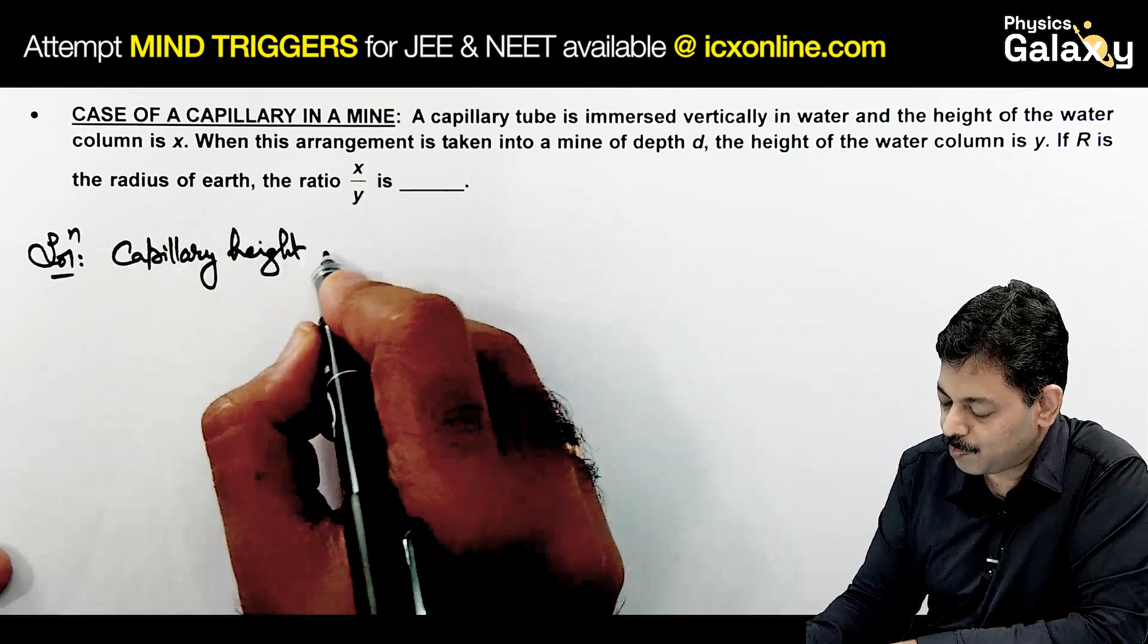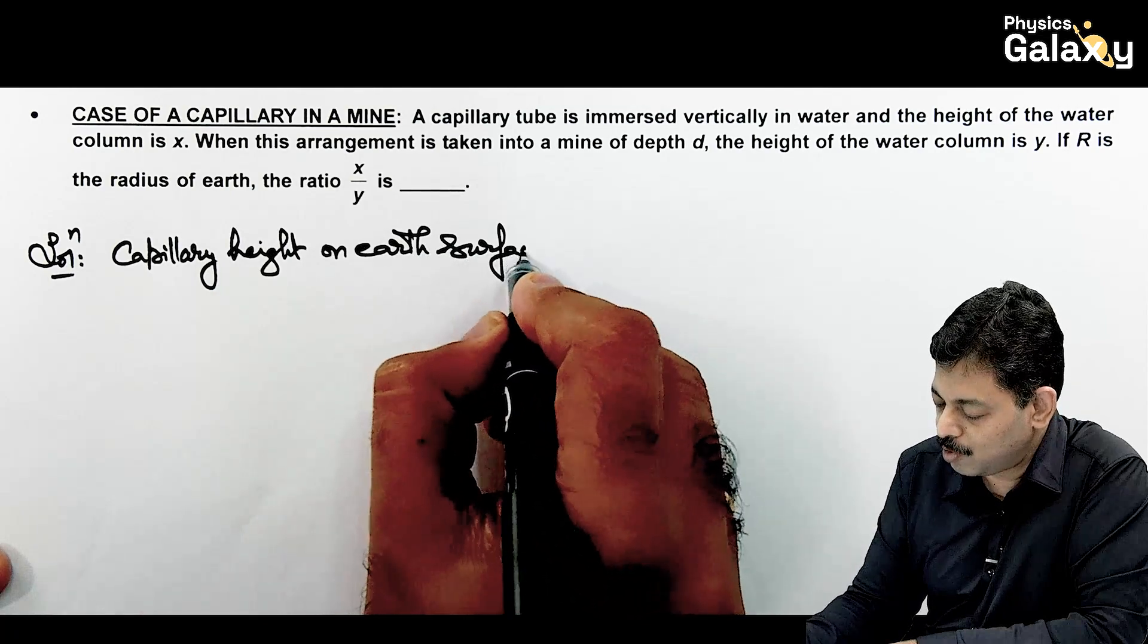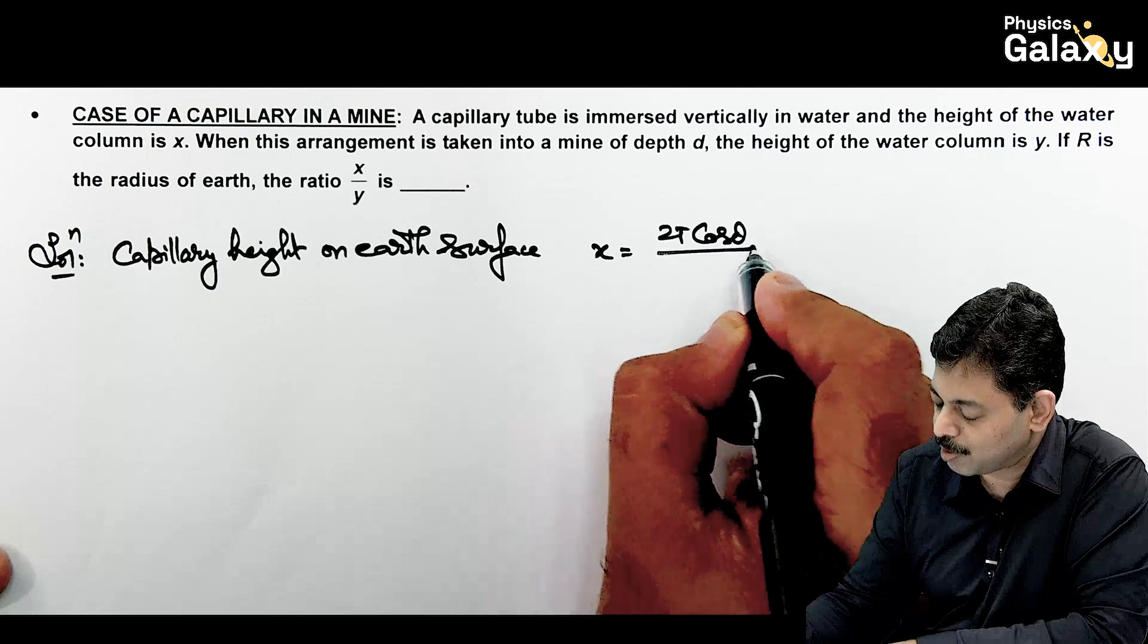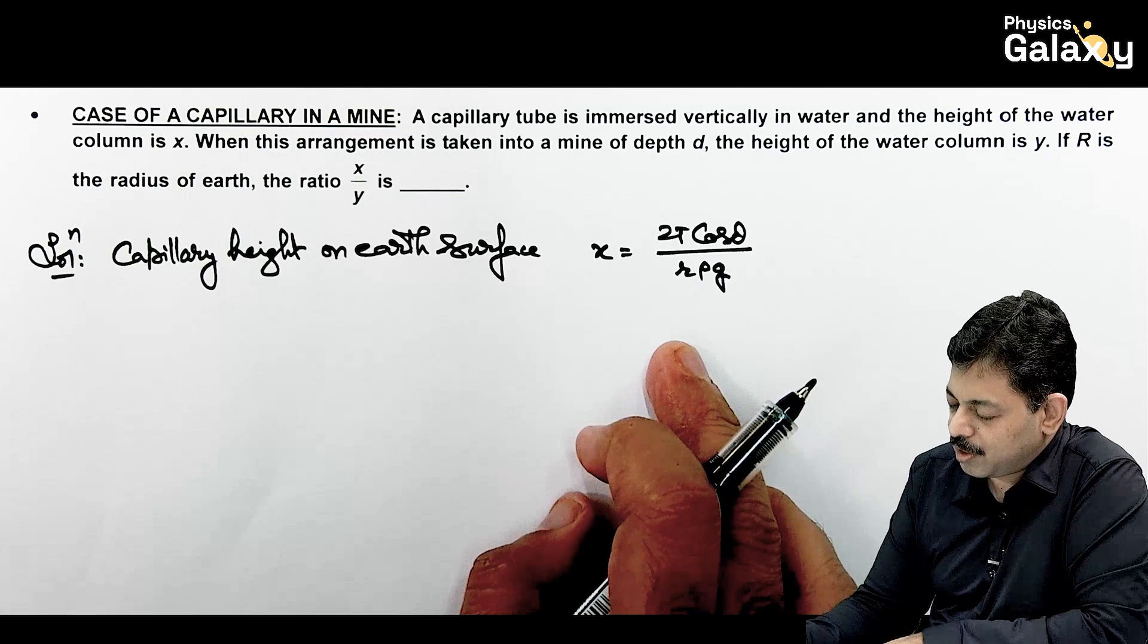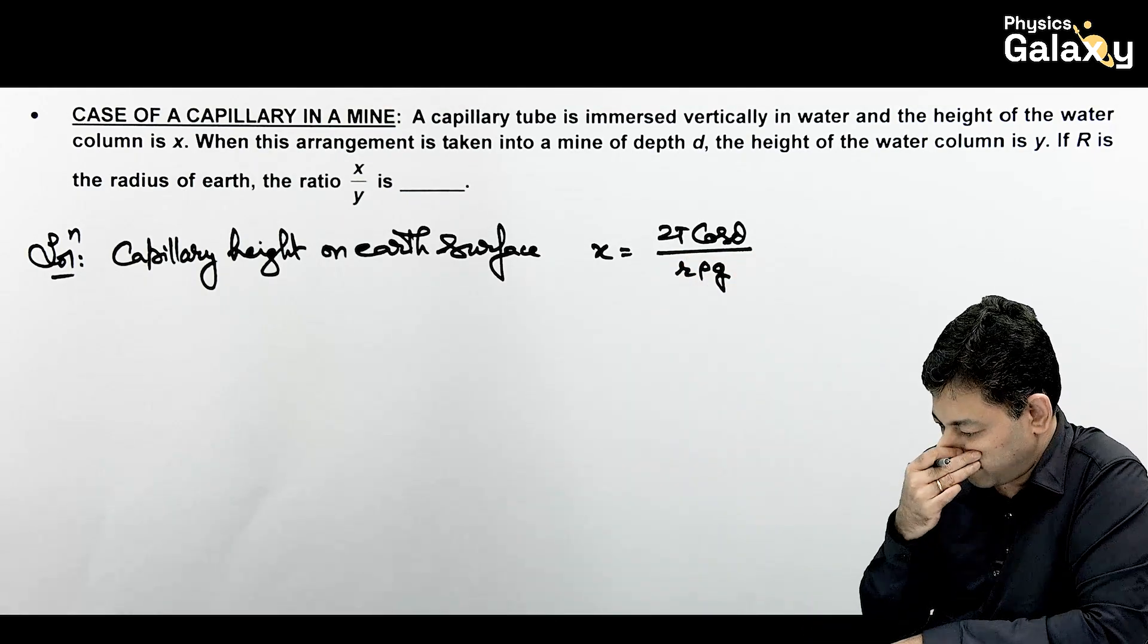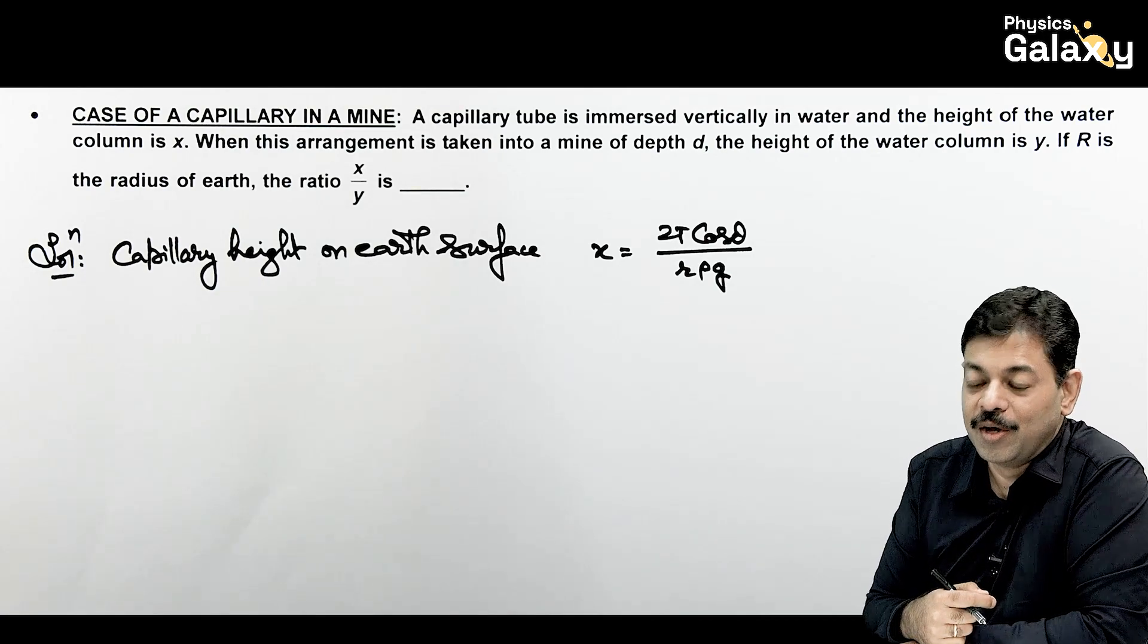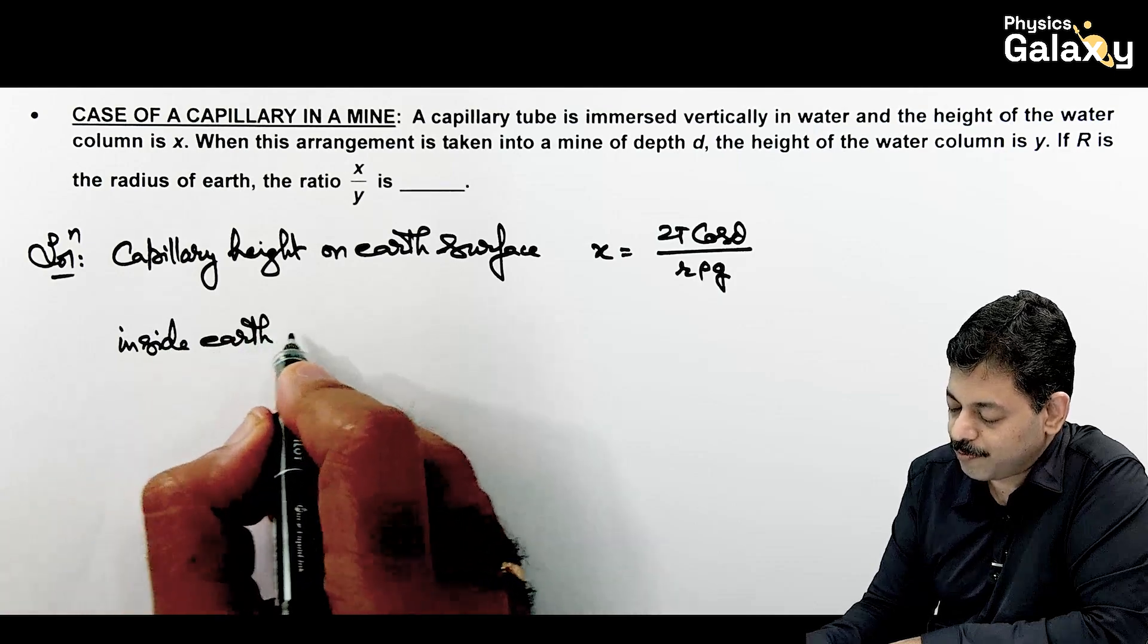It is saying the height of water column is y. So if R is the radius of Earth, we need to check the ratio x and y. If we calculate capillary height on Earth surface, we know very well the value of x is given as 2T cos theta divided by r rho g. In this situation, T is the surface tension, theta is the angle of contact, r is the capillary radius, rho is the density, and g is the acceleration due to gravity.